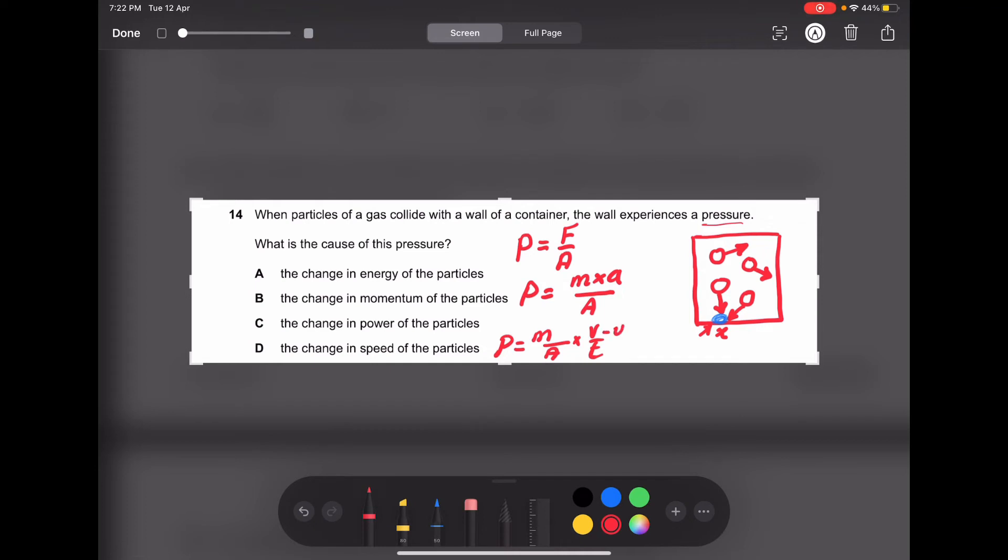You can write V minus U over T for the change in velocity per unit time, which is acceleration.